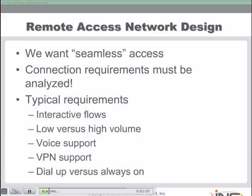Are they going to need Voice over IP over these connections? Are they going to need VPN? If they're going to need VPN, is it a secured VPN that they require? Are they going to have high volume or low volume traffic? Is it sufficient that they circuit switch — dial up and then tear down that connection — or do they need a permanent always-on connection to the network? These are all questions that we want to ask ourselves as we design the remote access network block for these remote access individuals in our organization.